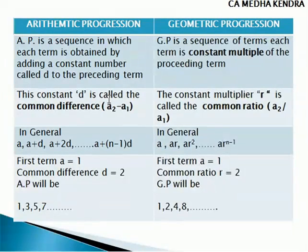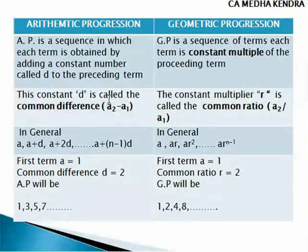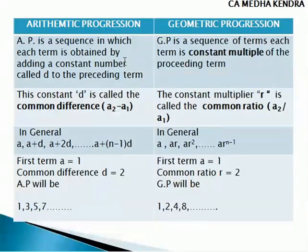Next, arithmetic progression and geometric progression. Arithmetic progression is obtained by adding a constant number, while geometric progression is obtained by multiplying a constant multiple. So, arithmetic progression involves addition and geometric progression involves multiplication.